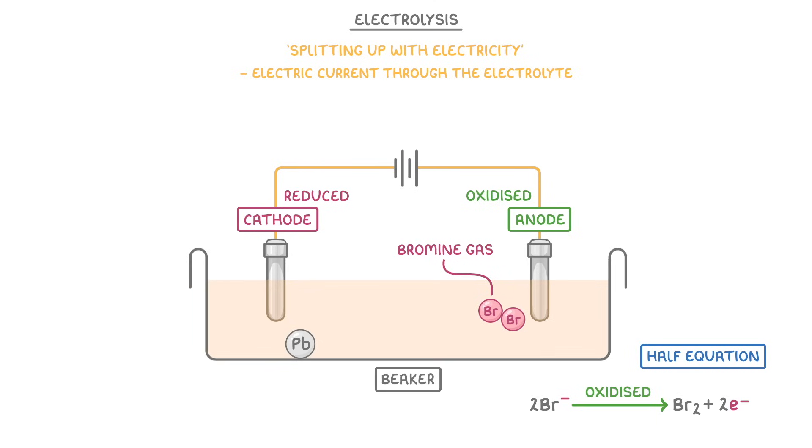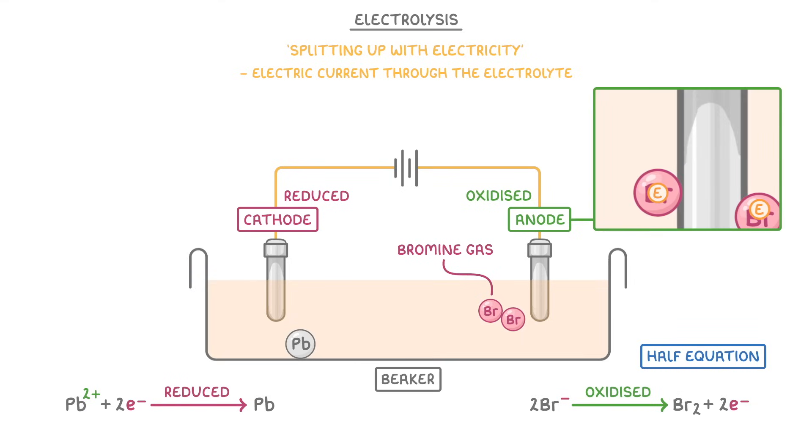Meanwhile at the cathode, the lead ions are each combining with two electrons, and so being reduced to form pure lead. So really, what's happening overall is that the electrons from the bromide ions are being passed to the positive anode, and then being transported along the wire around to the cathode, using the power of the battery.